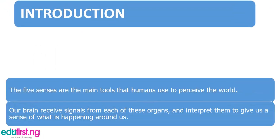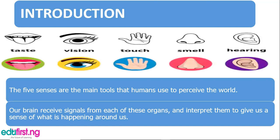The five sense organs are the main tools that human beings use to perceive the world around us. For example, how do you feel when you can't see, or something enters your eyes and you can't open them? If you are blind, you can't see the road. These are tools God has given us to perceive the world and know what is happening around us. Our brain receives signals from each of these organs and interprets them.